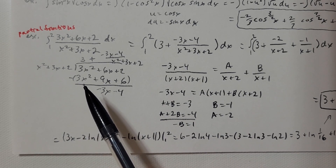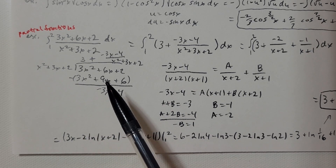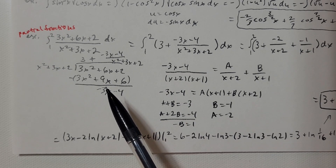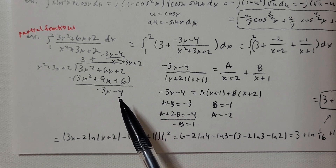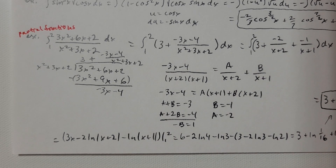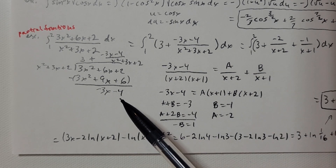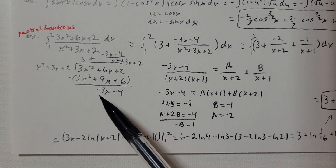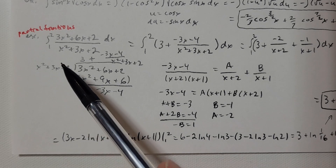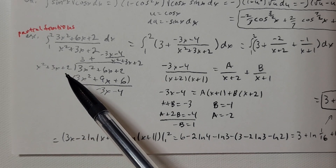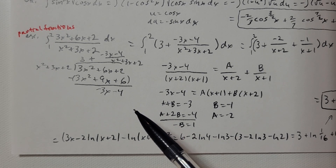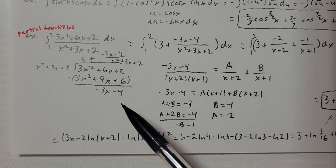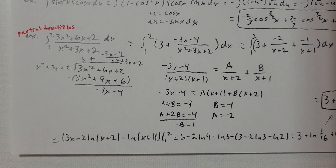3x squared minus 3x squared is 0. 6x minus 9x is negative 3x. And 2 minus 6 is negative 4, and I'm done dividing. In general, I'm done dividing whenever the degree of the remainder is less than the degree of the divisor — meaning the largest power of x that I see. So my remainder is negative 3x minus 4.